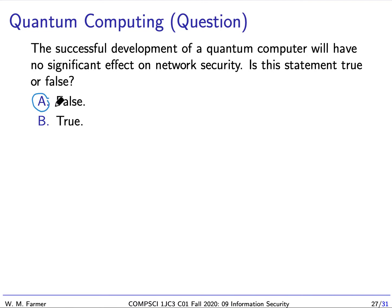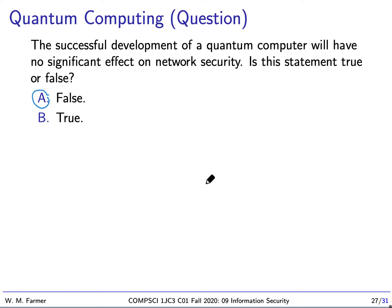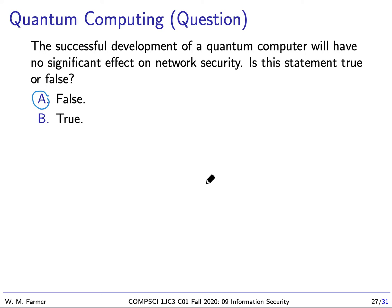The answer is false. If someone can build a practical quantum computer, one of the problems they can solve more efficiently is factoring large numbers. And if you can factor large numbers efficiently, then you can break the RSA algorithm. Remember, the RSA algorithm's security depends on it being infeasible to factor a product of two large prime numbers.